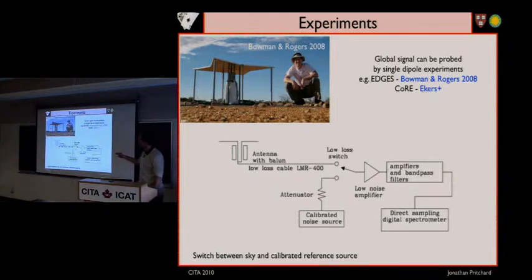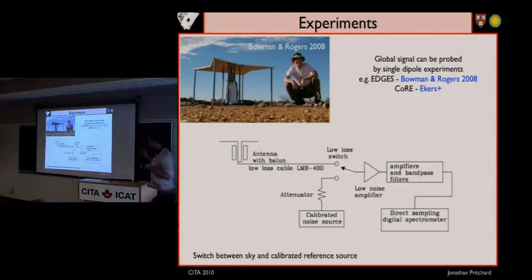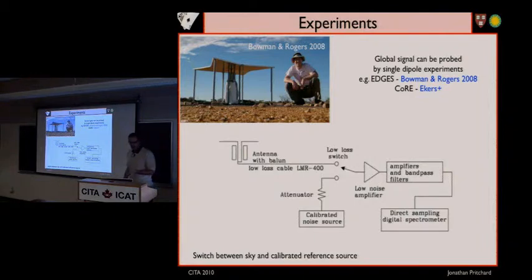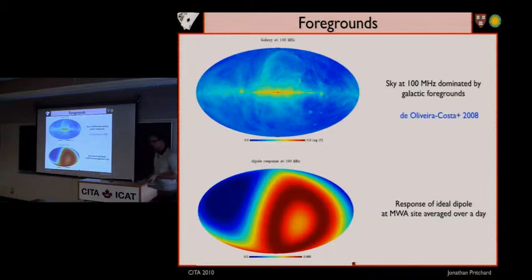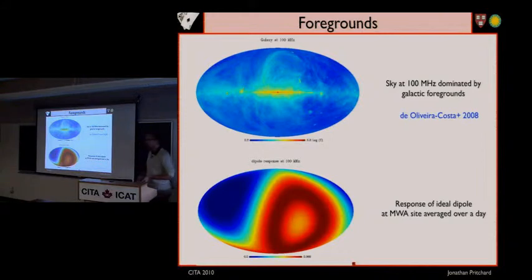Here's a picture of the EDGES experiment — Judd Bowman and Alan Rogers. It's just a single dipole experiment that looks at the sky. In similar fashion to things like COBE, you can flick between the sky and some sort of calibrated source, and make an absolute temperature measurement of the sky as a function of frequency. There are other experiments in the pipeline as well. Unfortunately, when you look at the sky, the first thing you see isn't the signal. The galaxy has plenty of electrons spiraling in magnetic fields, producing radio emission at these frequencies, and that dominates the signal by a couple of orders of magnitude.